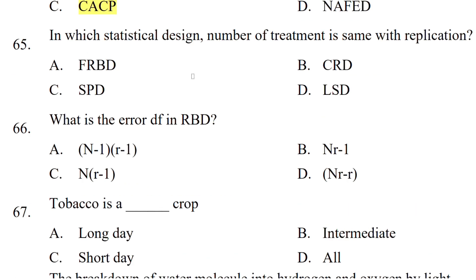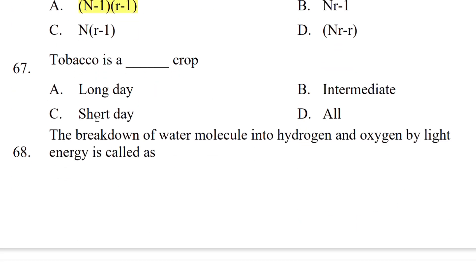In which statistical design is the number of treatments equal to the number of replications? The options are factorial RBD, completely randomized design, split plot design, or Latin square design. The correct answer is Latin square design. What is the error degrees of freedom in RBD? The correct answer is (n-1) into (r-1).